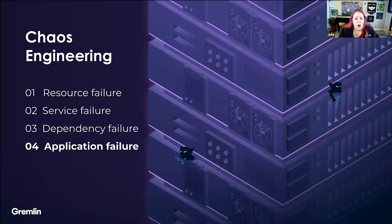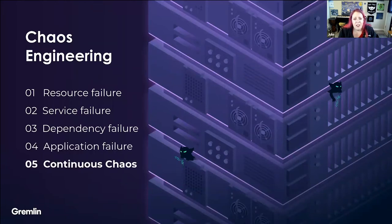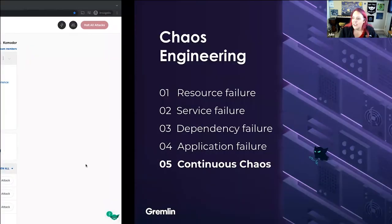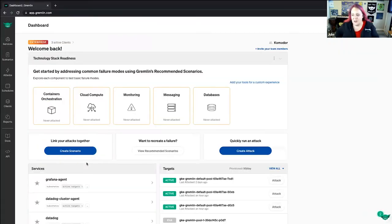There are also application failures where you move up the stack to test the application — you can inject latency into code or throw errors. When we talk about chaos engineering, we want continuous chaos so you can have confidence and resilience to a particular failure mode. We want to automate it to prevent drift into failure. So let's go ahead and kick off some attacks and see what we'll find in Commodore and how we can use it to troubleshoot.